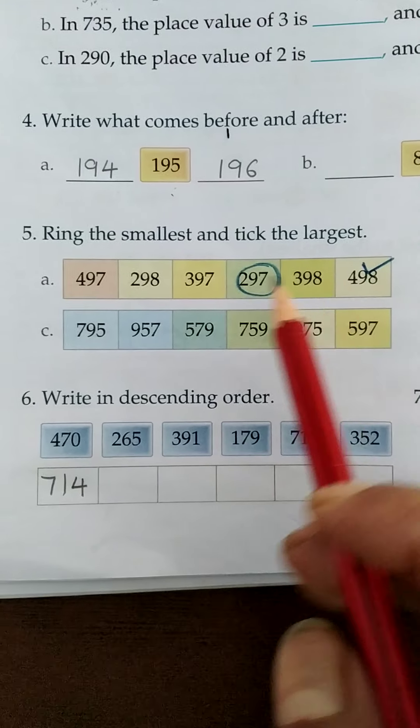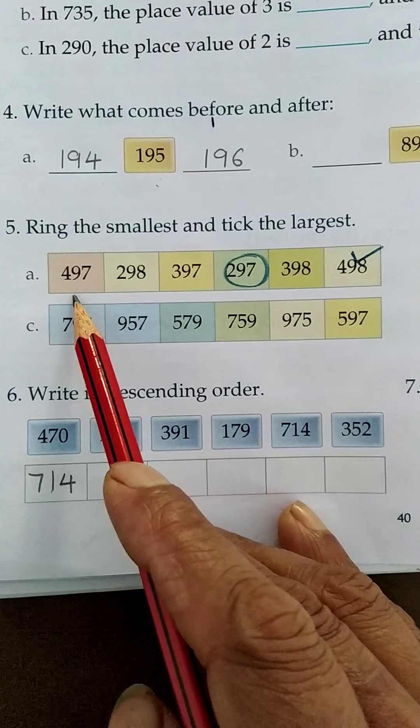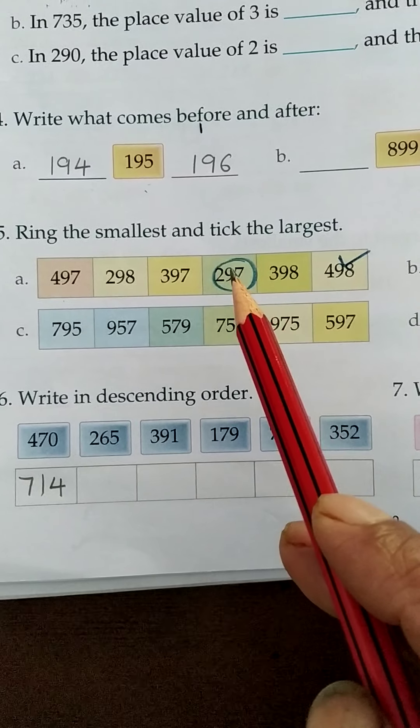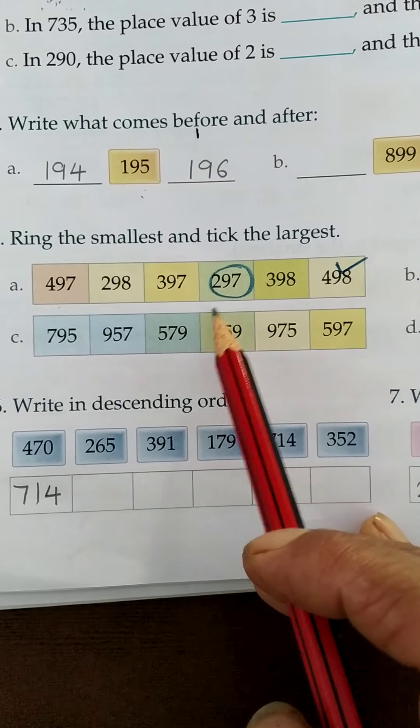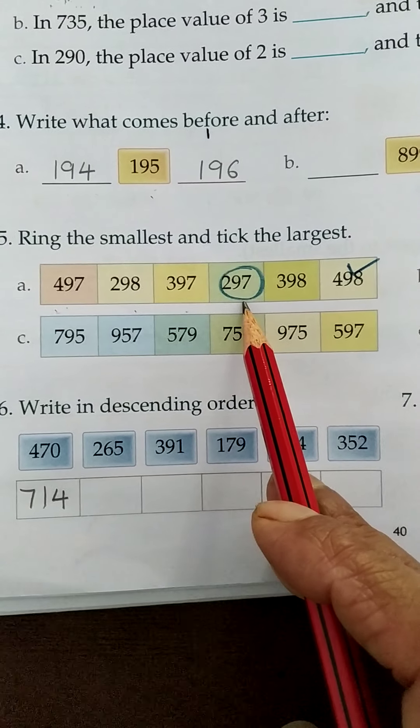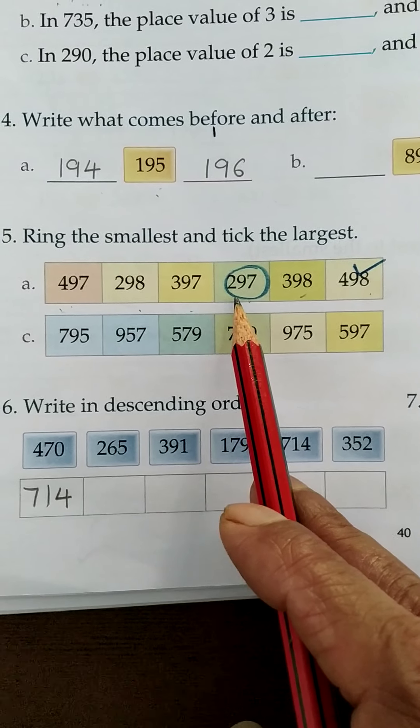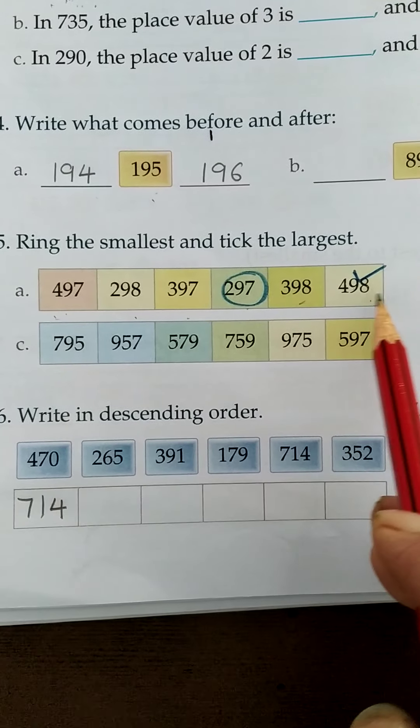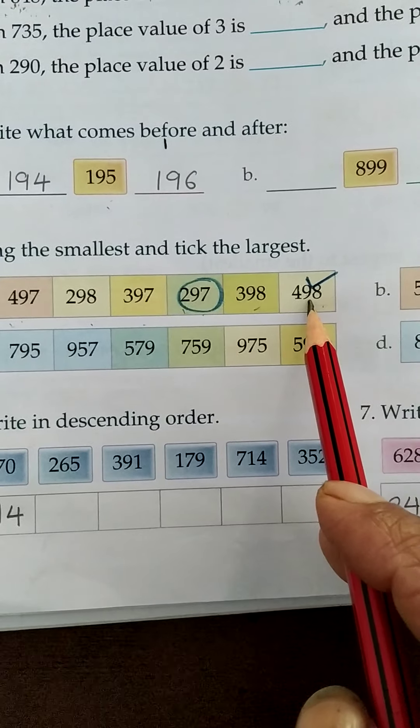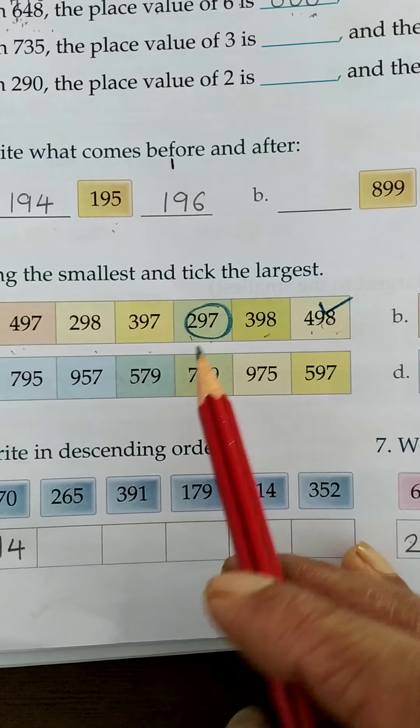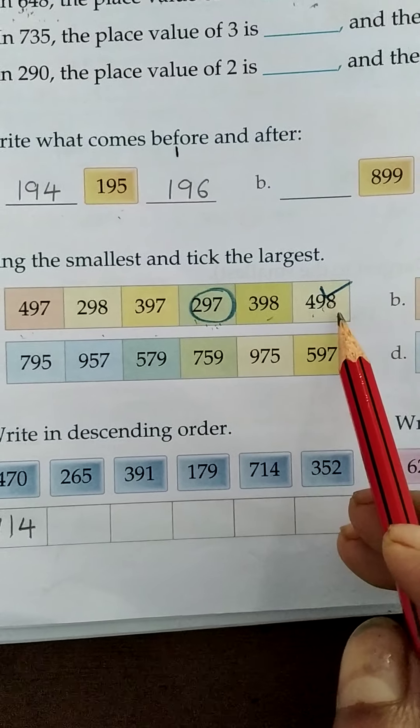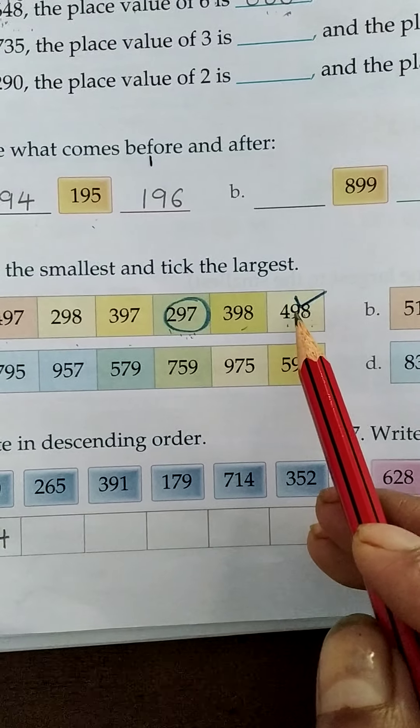The 5th one is ring the smallest and tick the largest. Students, in this series, which one is the smallest and which one is the largest? So 497, 298, 397, 297, 398, 498. First we compare the hundreds. So 298 is the smallest and 498 is the largest. So the number which is smallest you have to circle and which one is the largest we have to put the tick mark.